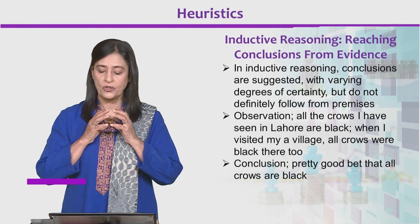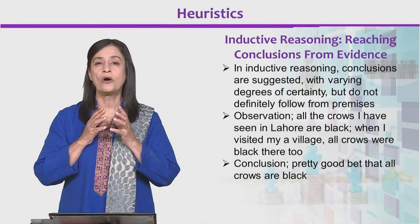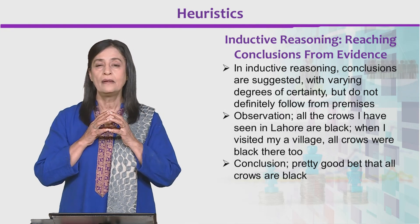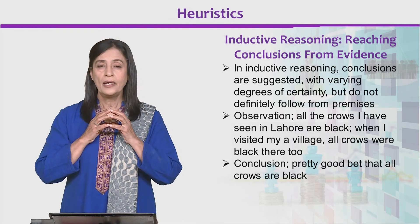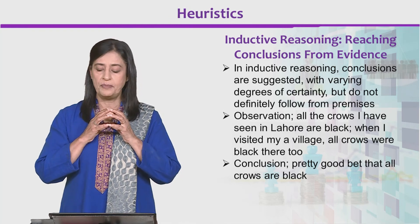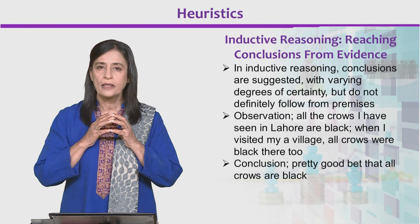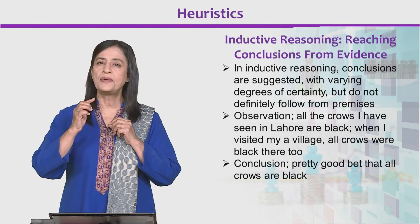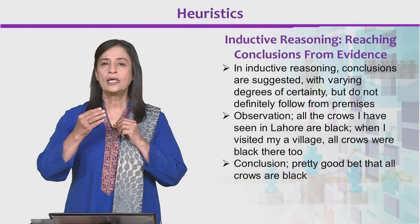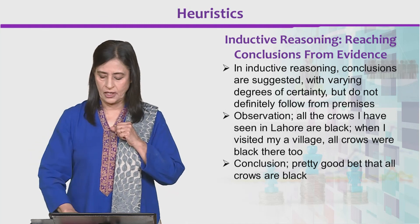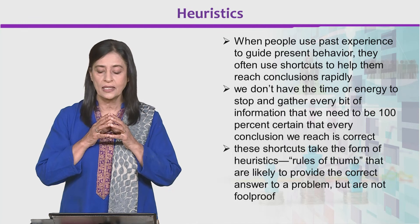all crows were black there too. So all the crows in Lahore are black, gaon mein bhi saray kowe kaale te. Conclusion: it's a pretty good bet that all crows are black. As we can see, yeh premises se necessarily follow naik kar raha, lekin observation se aap is natije ko mehfooz samajte. This is called inductive reasoning.